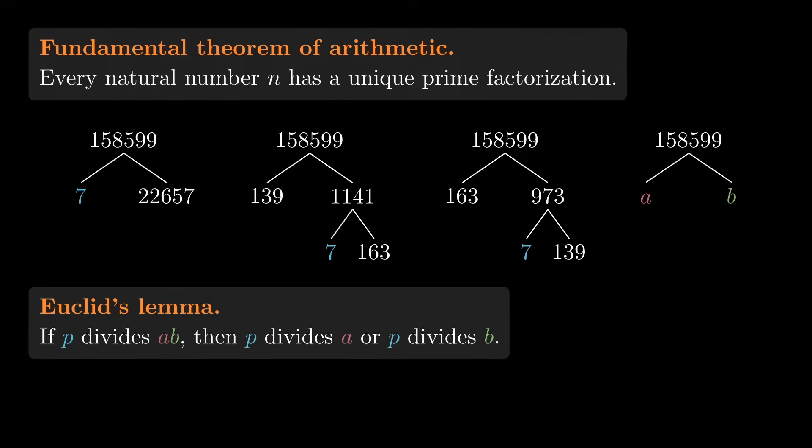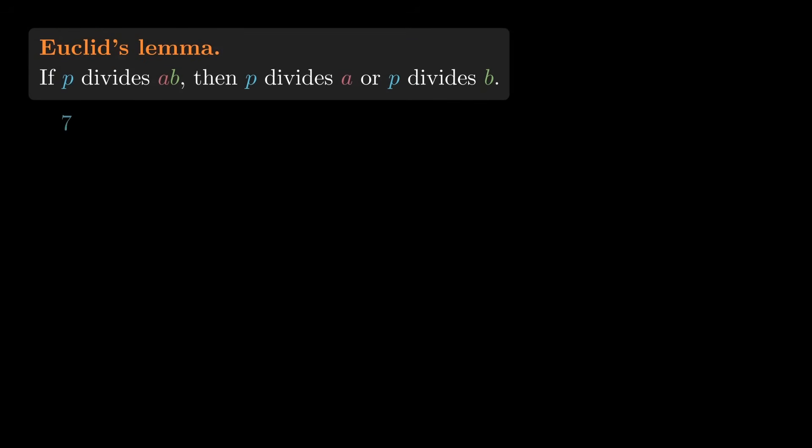But let's use an example where the numbers are smaller. Suppose p is 7, a is 33, and b is 35. 33 times 35 is 1155. Is 1155 divisible by 7? Well dividing by 7 gives 165. So yes.